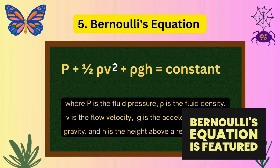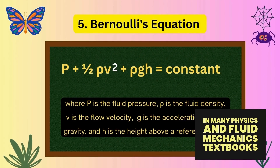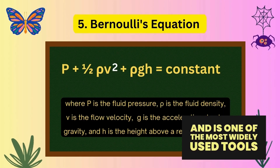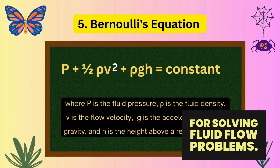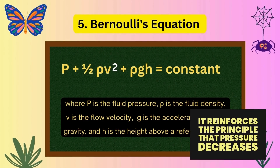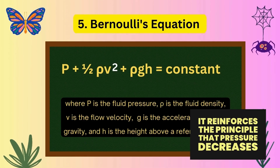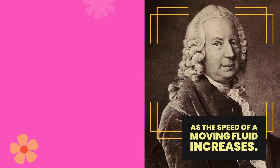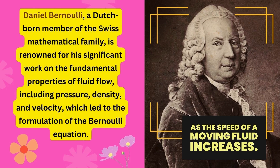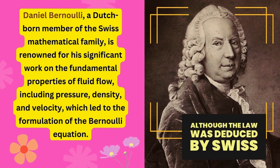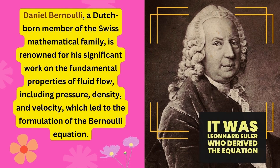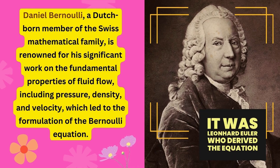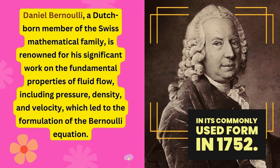Bernoulli's equation is featured in many physics and fluid mechanics textbooks and is one of the most widely used tools for solving fluid flow problems. It reinforces the principle that pressure decreases as the speed of a moving fluid increases. Although the law was deduced by Swiss mathematician Daniel Bernoulli, it was Leonhard Euler who derived the equation in its commonly used form in 1752.